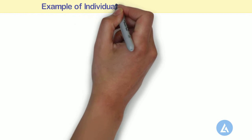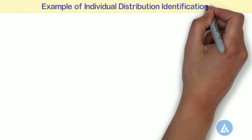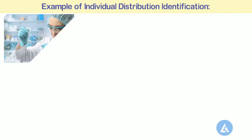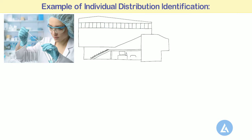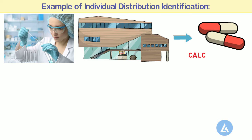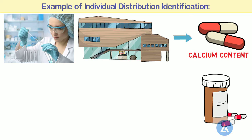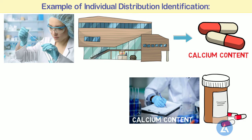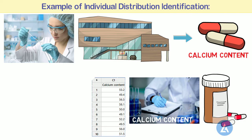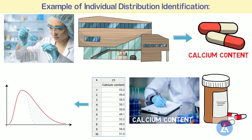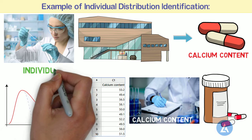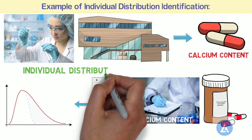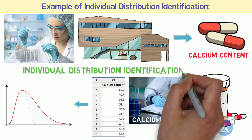Let's continue with the same example. A quality engineer for a nutritional supplement company wants to assess the calcium content in vitamin capsules. The engineer collects random samples of capsules and records their calcium content. To determine which statistical analysis is appropriate for the data, the engineer first needs to determine the data distribution, and therefore performs Individual Distribution Identification to determine which distribution best fits the data.